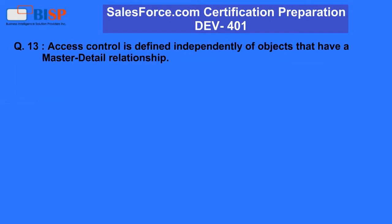Question 13: Access control is defined independently of objects that have a master detail relationship. A. False. B. True.